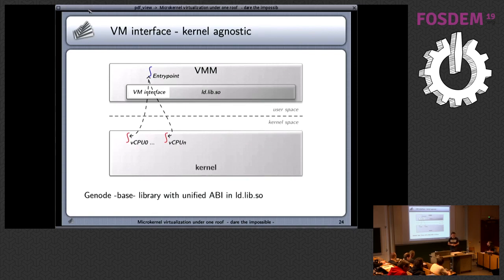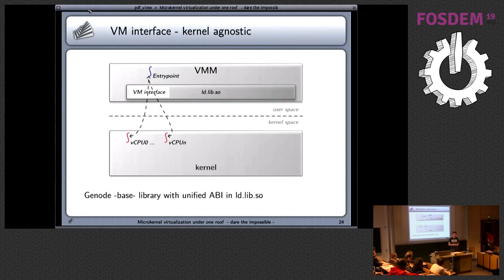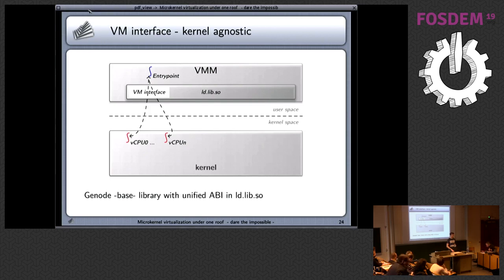Regarding the kernel-agnostic API: on Genode, the base library is part of the dynamic linker. The API for this shared library is kernel-agnostic and fixed. The actual implementation of the library can of course be kernel-specific. Depending on which kernel you're running, you get a different LDSO, but the interface is the same. All our components are typically dynamically linked. We put this interface in the base library and have the freedom to implement it kernel-specifically.